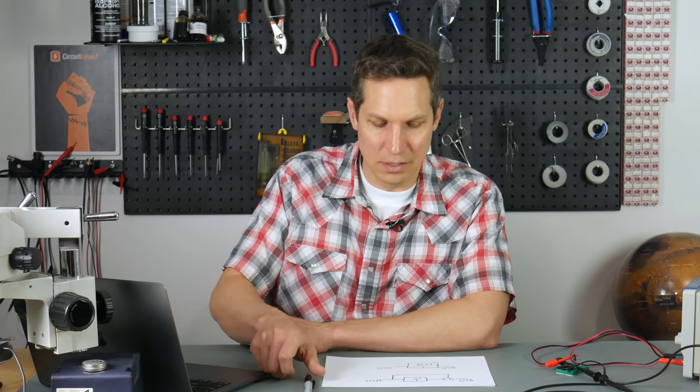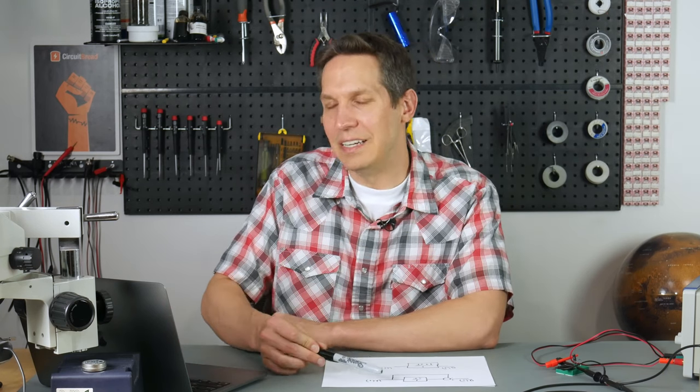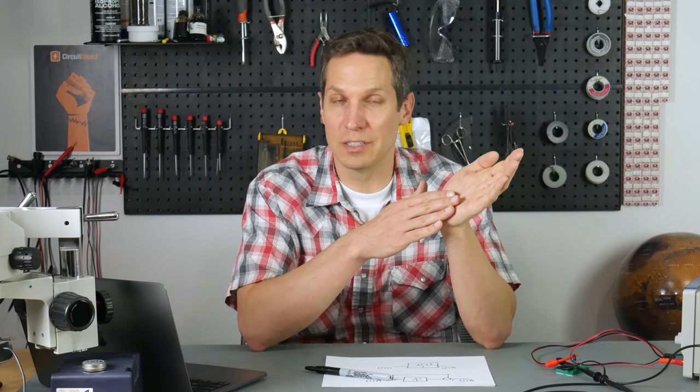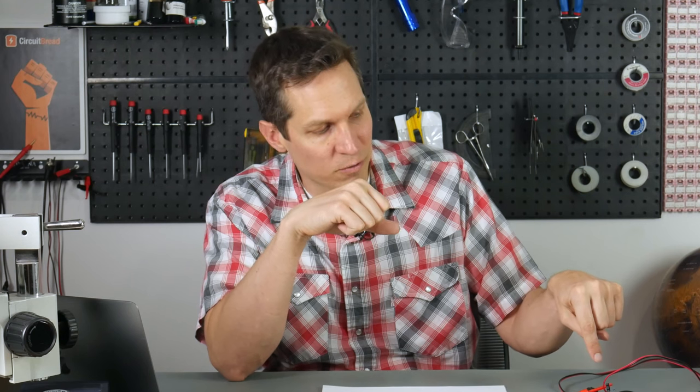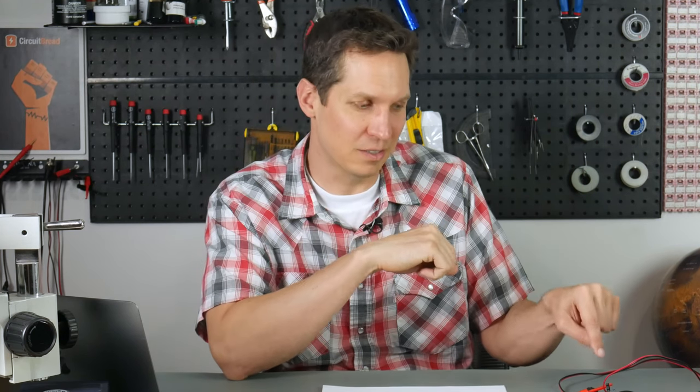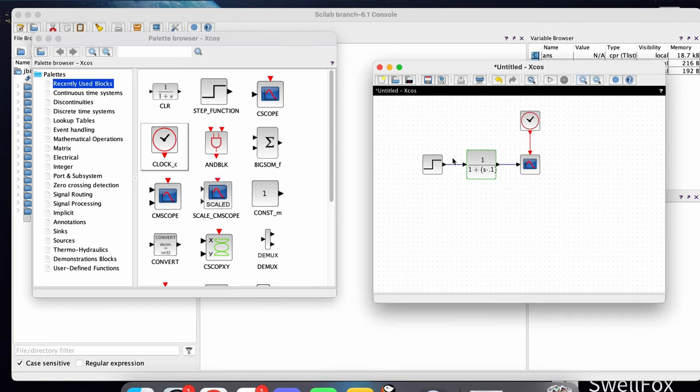Now, as we mentioned here, it is one over one plus ST. Now, T is actually the time constant. In this case, it's RC, the value of the resistor times the value of the capacitor. Now I have on my setup right here, a 100 microfarad capacitor and a 1000 ohm resistor. So RC is actually going to be 0.0001 times 1000. It's going to be 0.1. So T in this case is going to be 0.1. And that's why we have one plus S times 0.1, because we wanted to match what is going to be here as closely as possible.